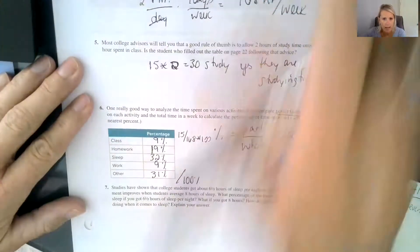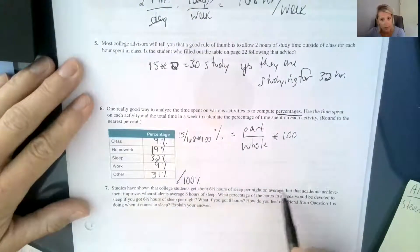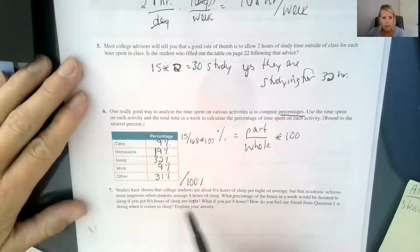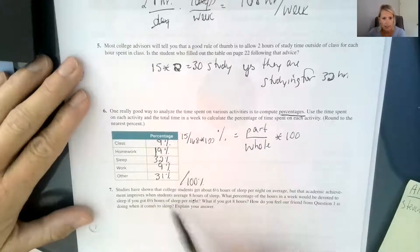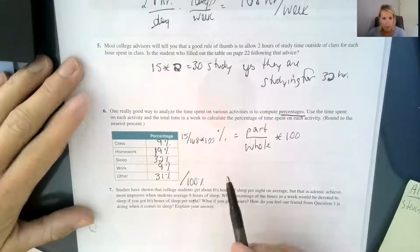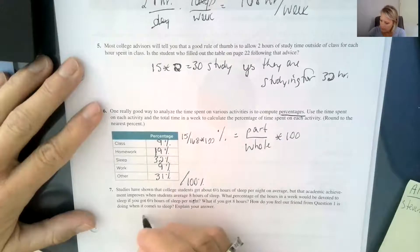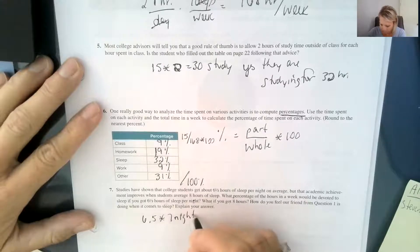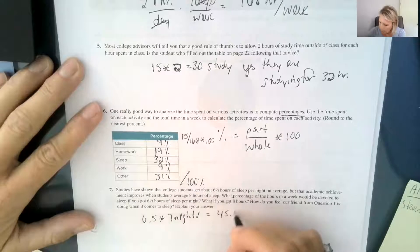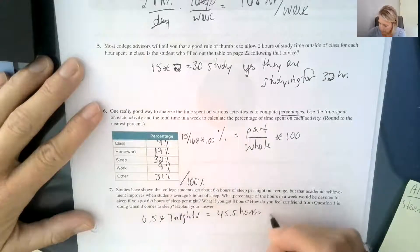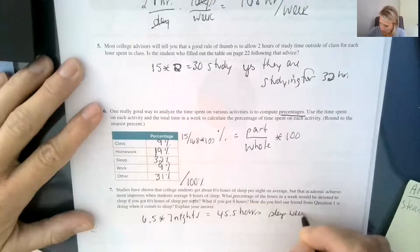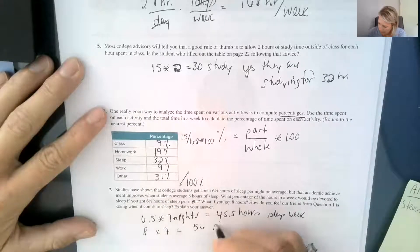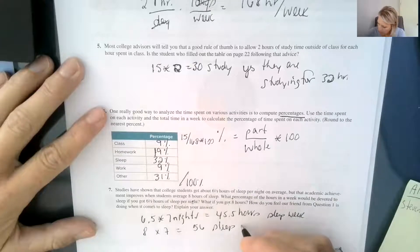Question number seven says, studies have shown that college students get about six and a half hours of sleep per night on average, but that academic achievement improves when students average eight hours of sleep. What percentage of the hours in a week would be devoted to sleep if you got six and a half hours of sleep per night, and what percent would be if you got eight? How do you feel our friend from question one is doing when it comes to sleep? So 6.5 per night times seven nights would be 45.5 hours sleep for the week, and eight hours a night times seven would be 56 sleep per week.